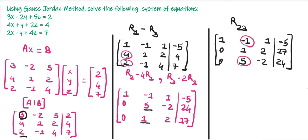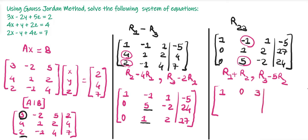Now we want to make the −1 (in row 1, column 2) and the 5 (in row 3, column 2) equal to 0. We perform R1 → R1 + R2, since −1 + 1 = 0, and R3 → R3 − 5R2, since 5 − 5 = 0. The new first row is 1, 0, 3, 12. The second row remains the same. The third row becomes 0, 0, −12, −61.